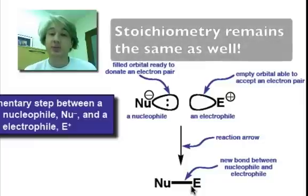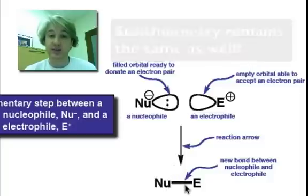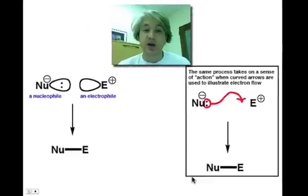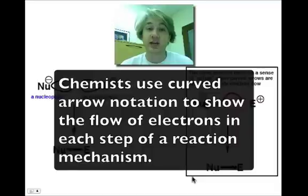Our stoichiometry has also remained the same, where we have the NU and E shown on the reactant side of our reaction, and then an NU and E on our product side of the reaction. Now, we can generally show this nucleophile attacking the electrophile by your curved arrow notation.